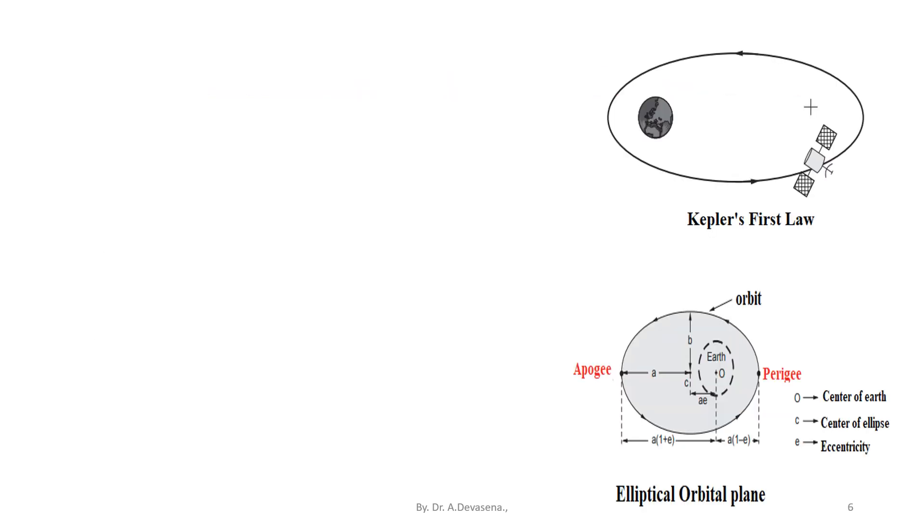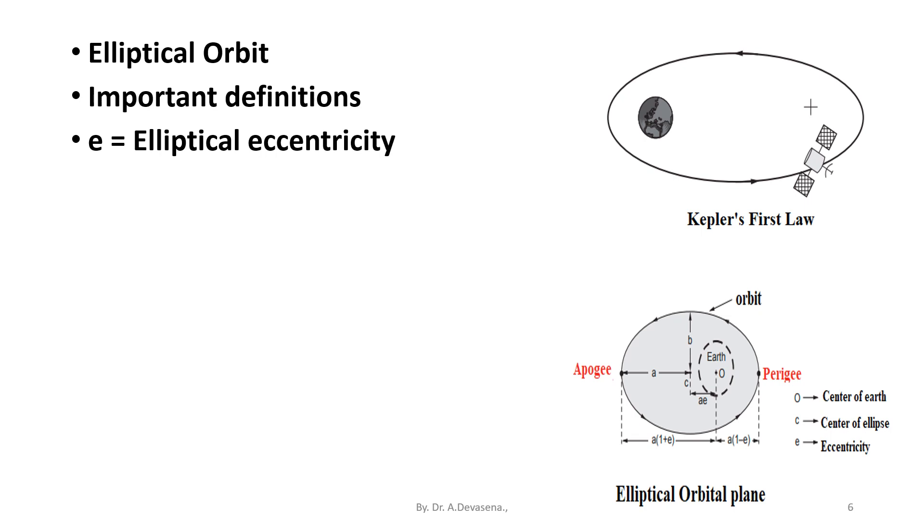For an elliptical orbit, the important definitions are: e is the elliptical eccentricity. The value of 0 less than e less than 1 means that indicates the orbit path is ellipse. The value of e equal to 0 means the orbit path takes the circle.